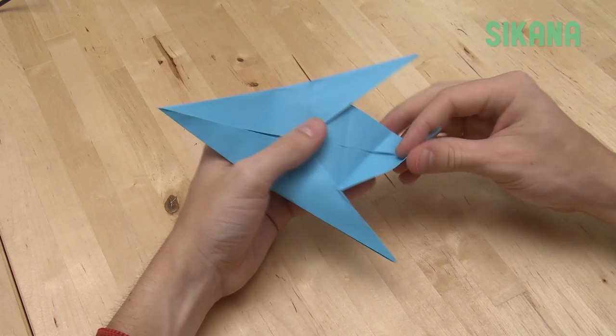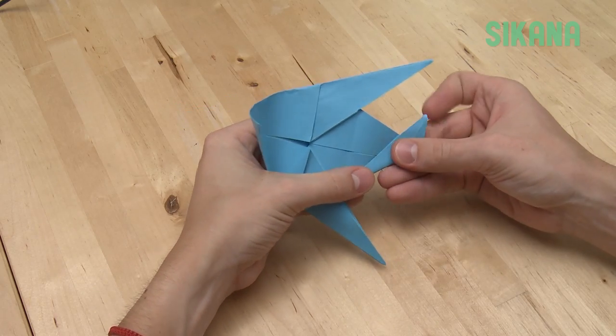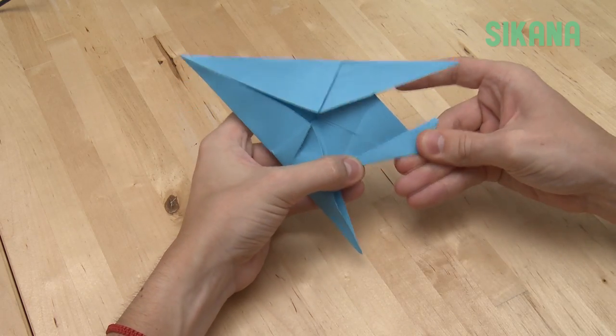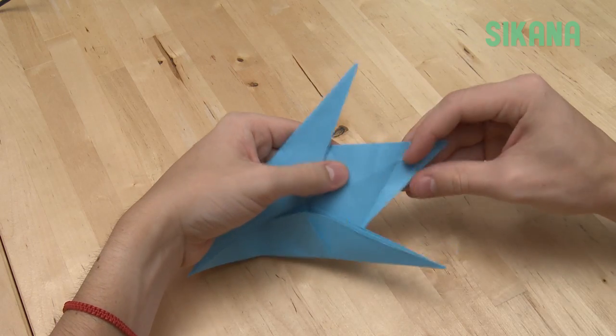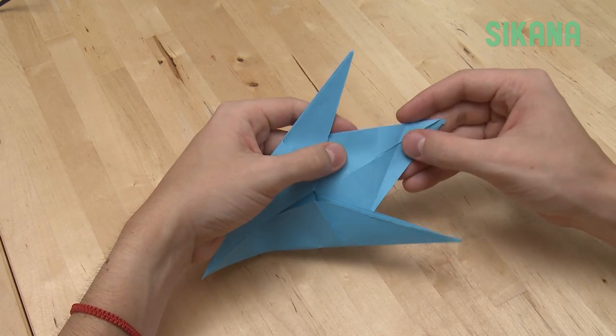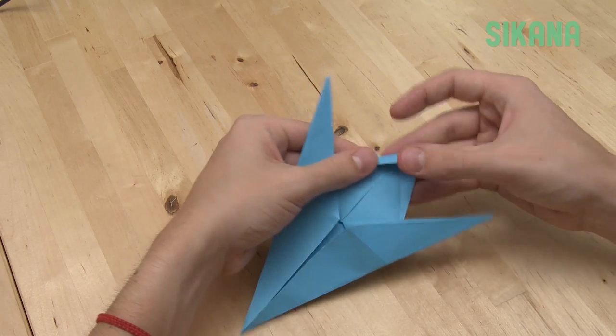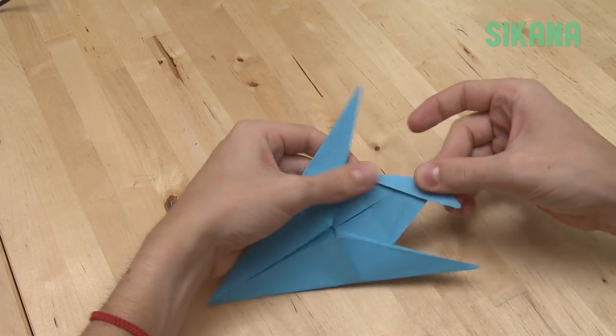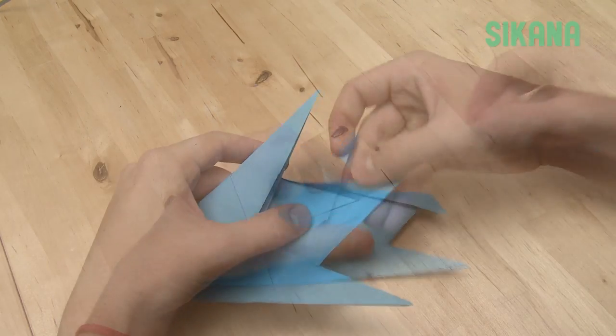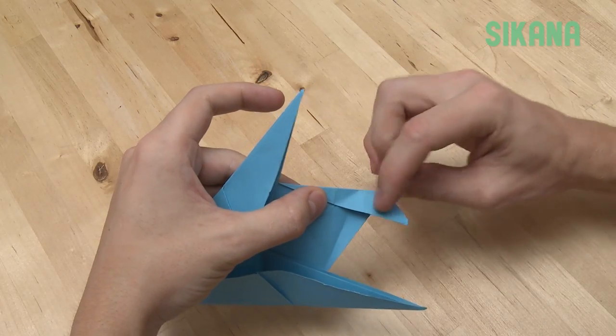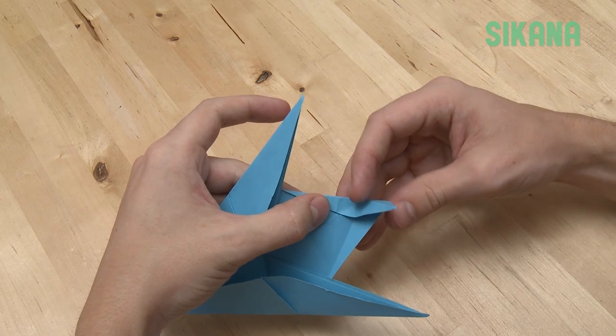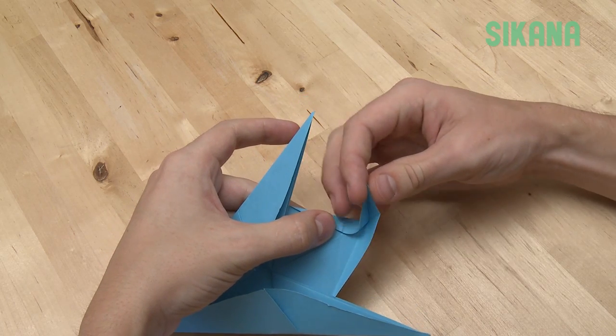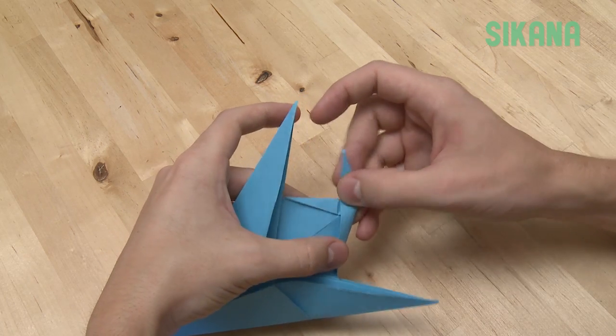Repeat for the new crease. Make a crease on this center point. The following fold is complicated. Fold this part. Use the crease here to lift up the point and fold.